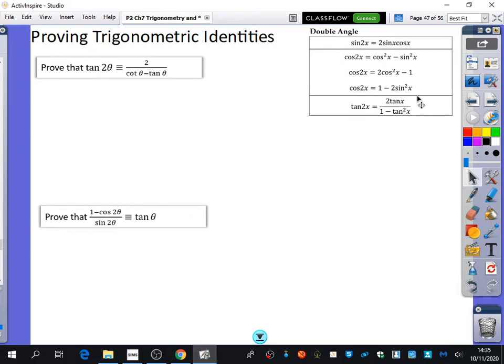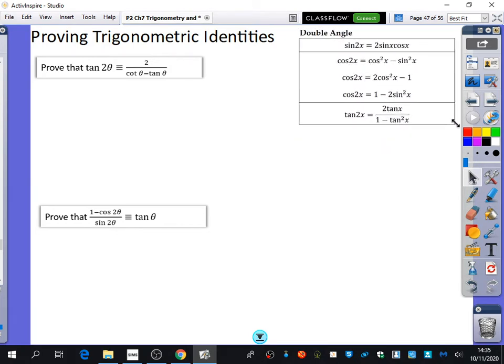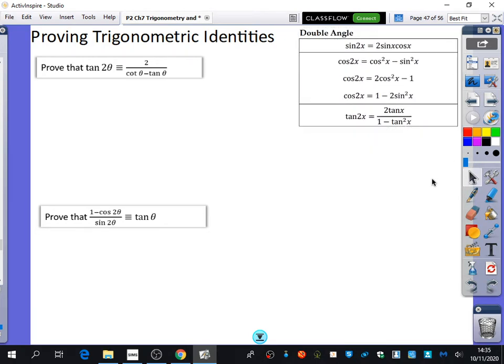So I've put the double angle formula up here as a reminder, but these are things that you should be remembering already. There's three of them for cos 2x and there's just the individual ones that you have for sine 2x and tan 2x here.